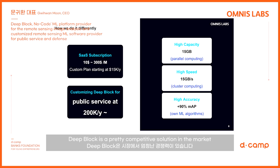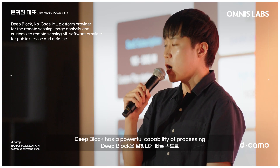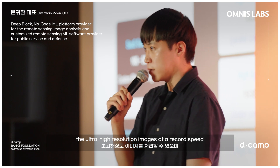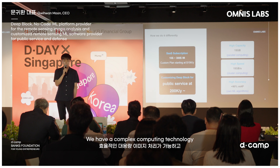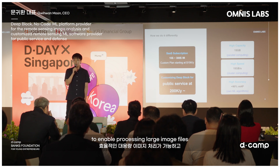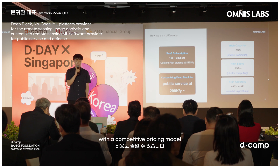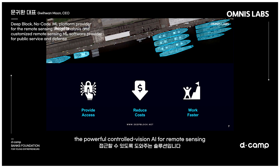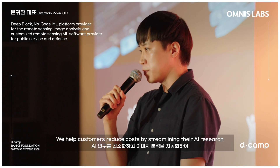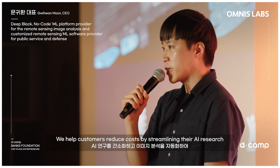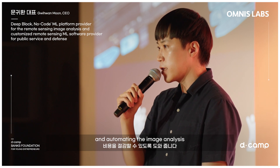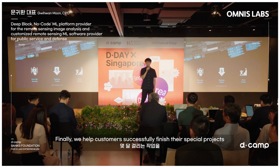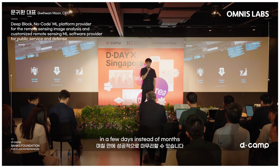DeepBlock is a very competitive solution in the market. DeepBlock has a powerful capability of processing ultra-high resolution images at record speed. We have complex computing technology to enable processing large image files with a competitive pricing model. DeepBlock enables users to access powerful AI for remote sensing, helping customers reduce costs by streamlining their AI research and automating image analysis, and helping customers successfully finish their geospatial projects in a few days instead of months.